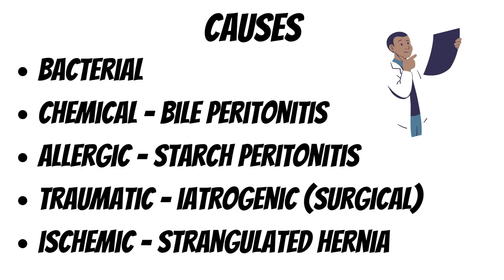Certain patients can develop allergic reactions and it is called allergic peritonitis. Traumatic causes include iatrogenic causes, induced by the doctor during abdominal surgery if they accidentally perforate the bowel, causing spillage of bowel contents into the peritoneal cavity, leading to peritonitis. Ischemic causes occur in cases like strangulated hernia.